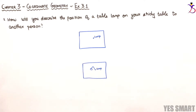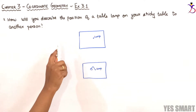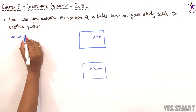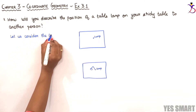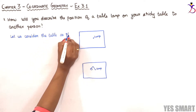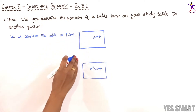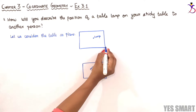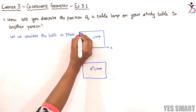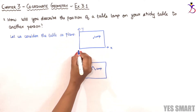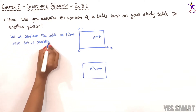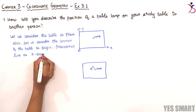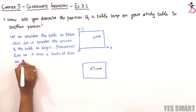In order to communicate the exact position of this table lamp to another person, we can consider our study table as a plane with an x-axis and y-axis — similar to how latitudes and longitudes are marked. We will consider this horizontal line as the x-axis, this vertical line as the y-axis, and the corner of the table as the origin O.